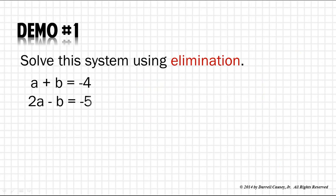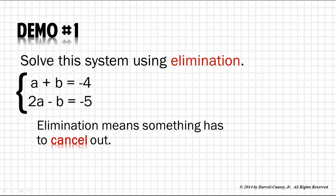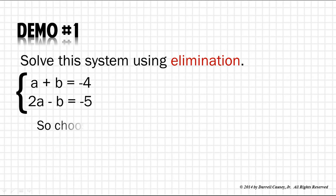Demonstration number one. Solve this system using elimination: a plus b equals negative 4, and 2a minus b equals negative 5. The solution to these two equations is where they cross. If you were to graph them, it would be the point at which these two lines cross. Elimination means that something has to cancel out. Let's choose a variable and eliminate it. Let's eliminate b.